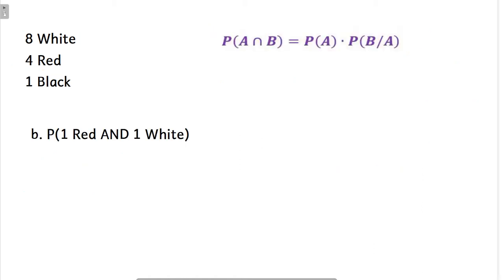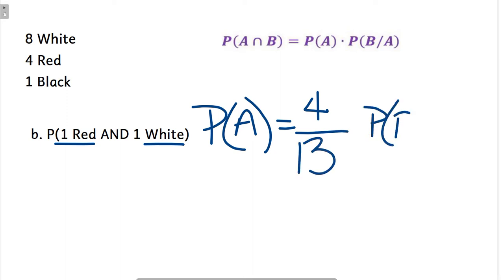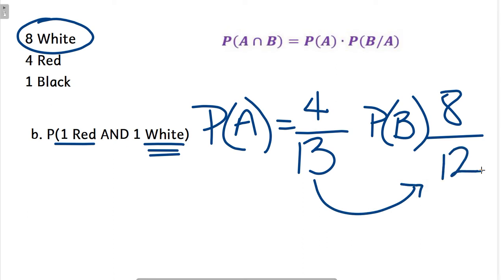This time we want the probability that there's one red, we keep that out, and then when we go and choose another, we get a white. Probability of A happening is, there's four reds, thirteen total. Probability of B happening, we're choosing a white. We haven't chosen a white yet, so there are still eight in the jar. That doesn't change, but there are no longer thirteen in the jar, there are now only twelve.